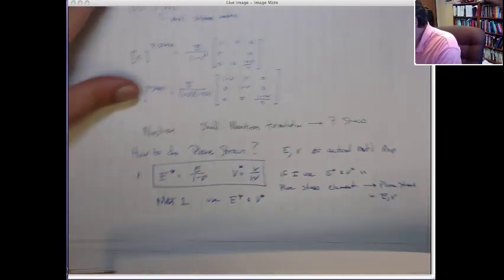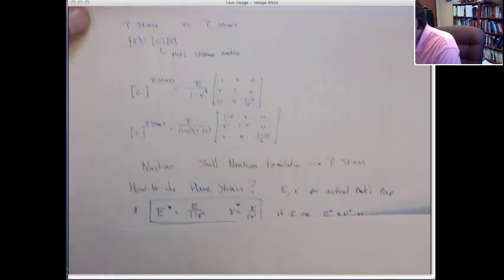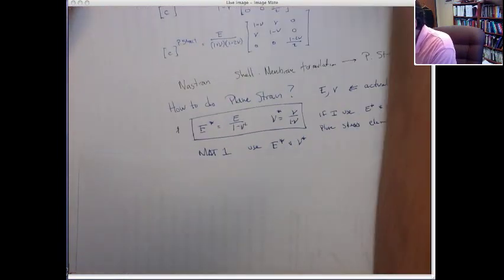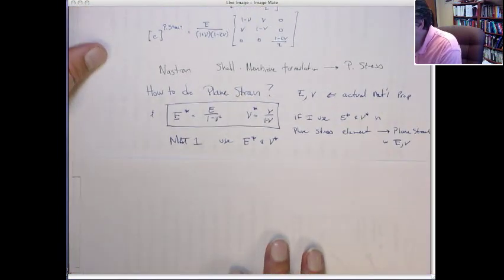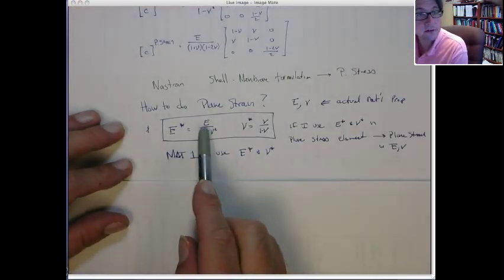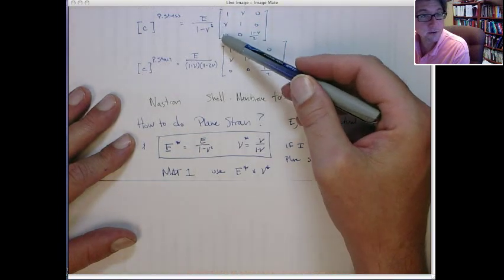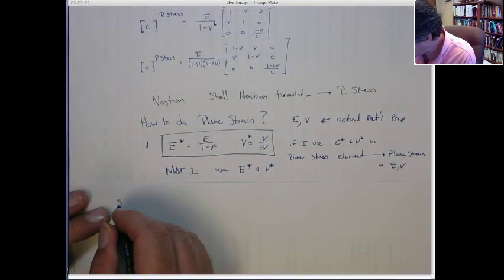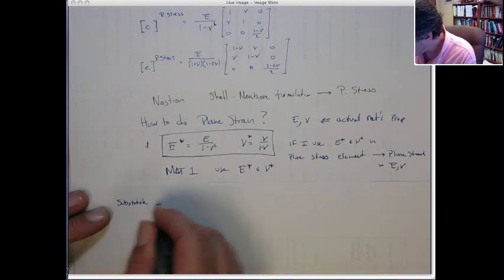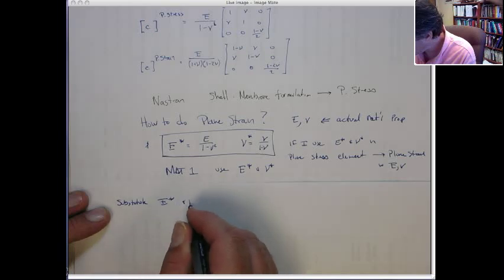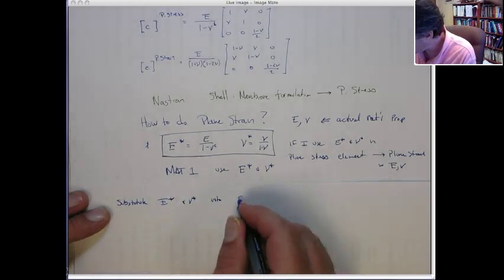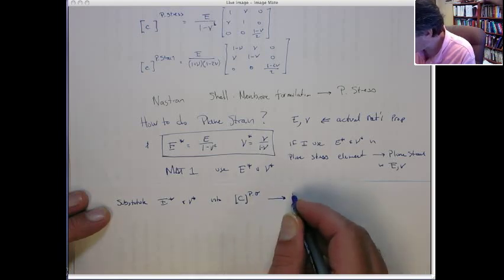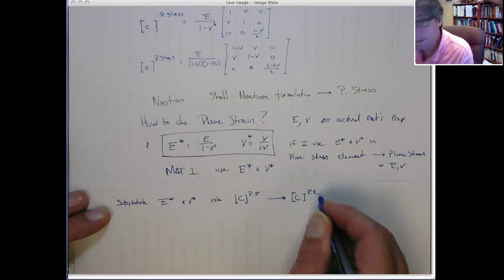So I want to show that now. So basically, what we're going to do here is just substitute E* and ν* into here for E and ν, and show that that gives me the same as this. So that's what I'm going to do. So let's substitute E* and ν* into the C matrix for plane stress, and show that that actually gives me the C matrix for plane strain.